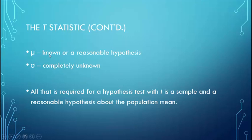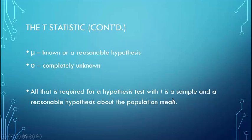Our question is: did our treatment work? Is there a difference between our treated sample and the rest of the population? In order to do a one-sample t-test, you must know or at least have an estimate of the population mean. So you have to know or have a good idea of the population mean, but you don't need to know anything about the population standard deviation. So for a one-sample t, mu — the population mean — has to be known or you need a reasonable hypothesis about it. Sigma, the population standard deviation, can be completely unknown.